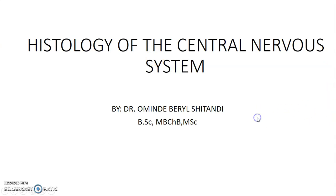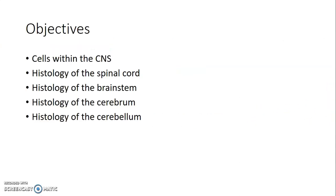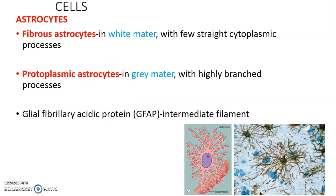We have different cells in the CNS. Astrocytes are of two types: fibrous astrocytes, found in white matter, which have few straight cytoplasmic processes; and protoplasmic astrocytes, found in the gray matter, which have highly branched processes. Astrocytes contain gliofibrillary acidic protein (GFAP) as their intermediate filament.